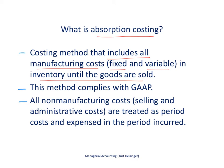When we say fixed manufacturing costs, we're talking about, for example, the lease on the factory where we produce our products. And when we're talking about variable manufacturing costs, we're talking about things like direct materials that go into the product we are making. This method does comply with GAAP, so if you've had financial accounting, you've followed this absorption costing method.